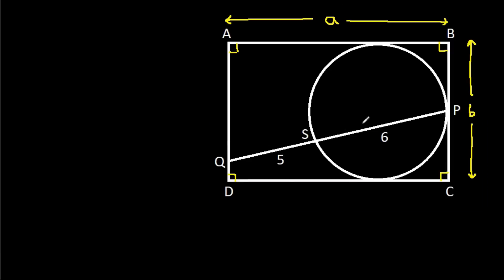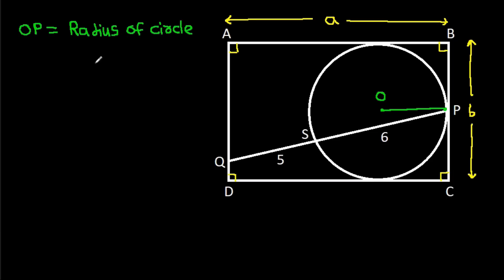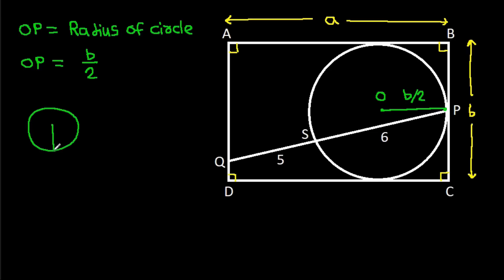Now, suppose the center of the circle is O. Then OP will be the radius of the circle, so OP will be B over 2. And in any circle, the radius and tangent are perpendicular to each other, so these angles will be 90 degrees.